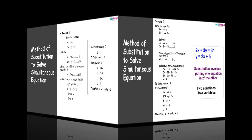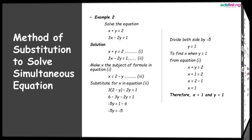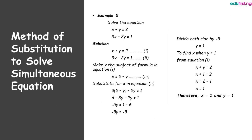For the next example, we have x plus y equal to 2 as equation 1, and 3y minus 2x equal to 1 as equation 2. From equation 1, we make x the subject of the formula and we have x equal to 2 minus y. We label this equation 3.